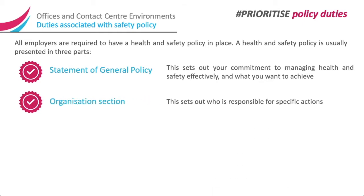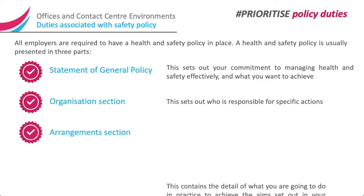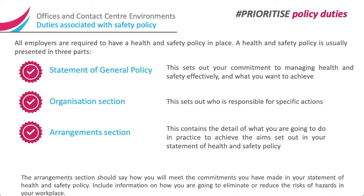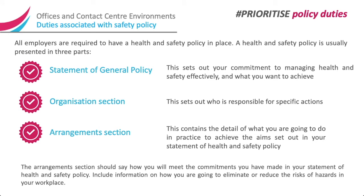The second is the Organisation section, which sets out who is responsible for specific actions. The third is the Arrangements section, which contains the detail of what you are going to do in practice to achieve the aims set out in your statement of health and safety policy. The arrangements section should say how you will meet the commitments you have made in your statement of health and safety policy, including information on how you are going to eliminate or reduce the risks of hazards in your workplace.